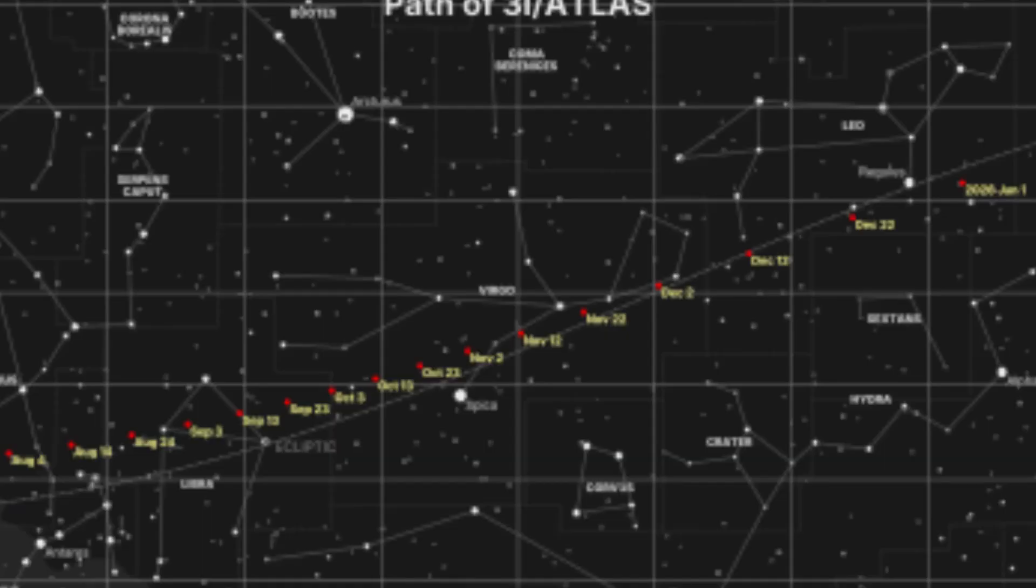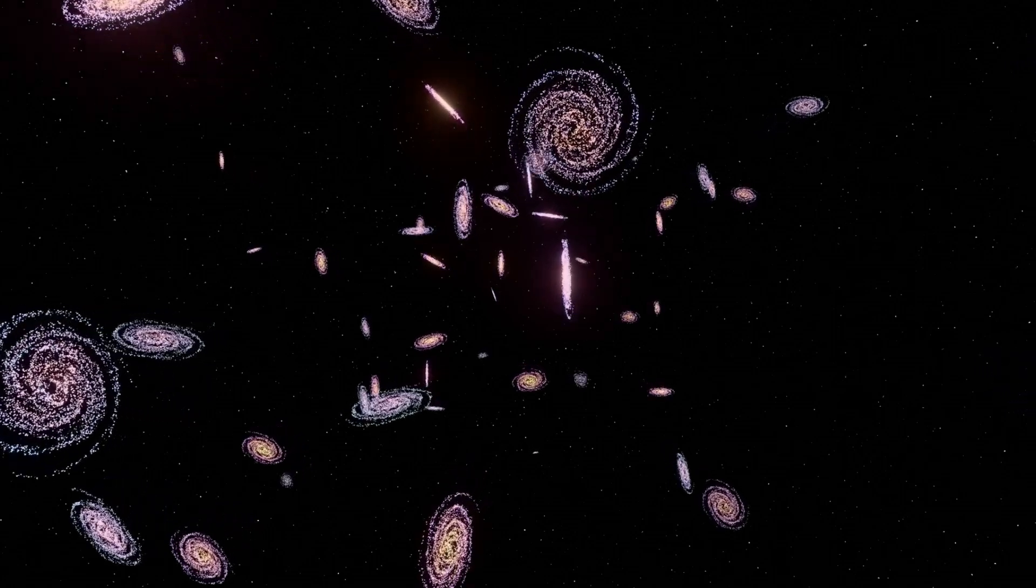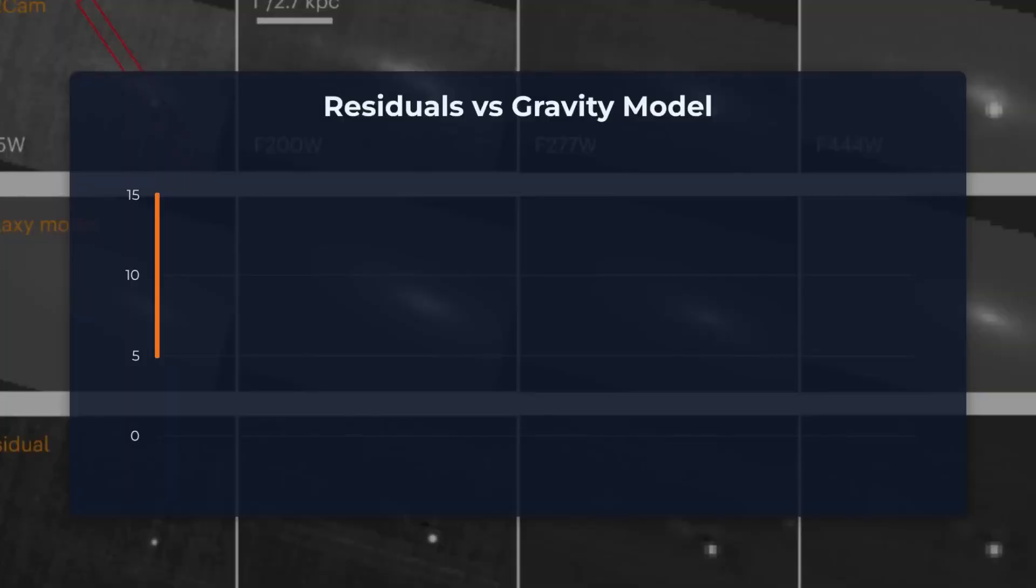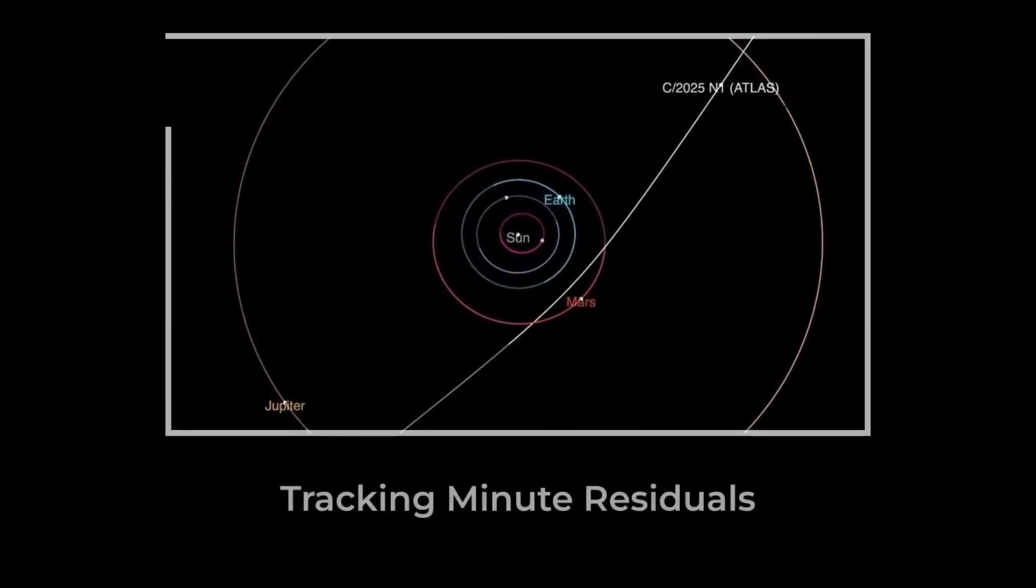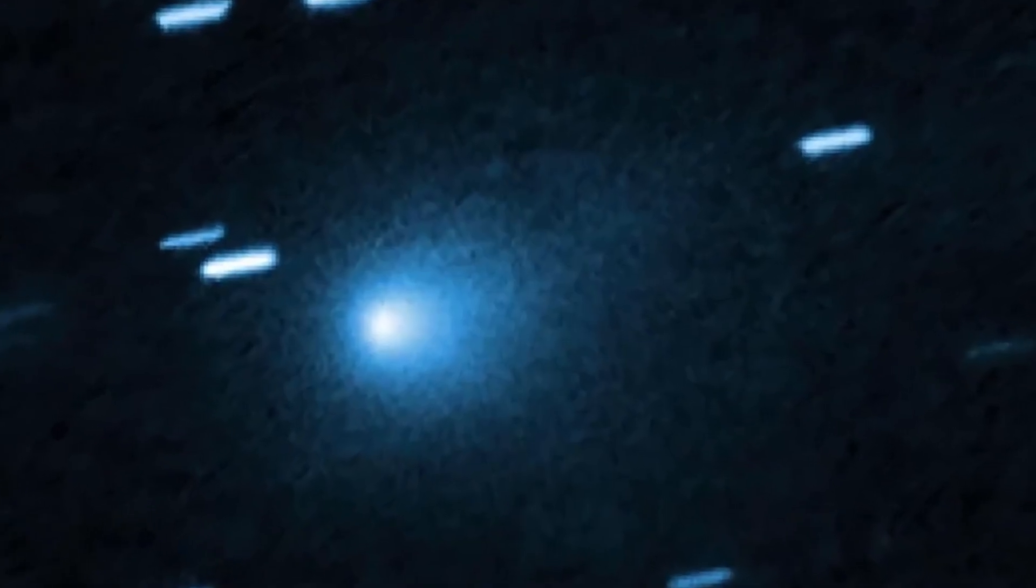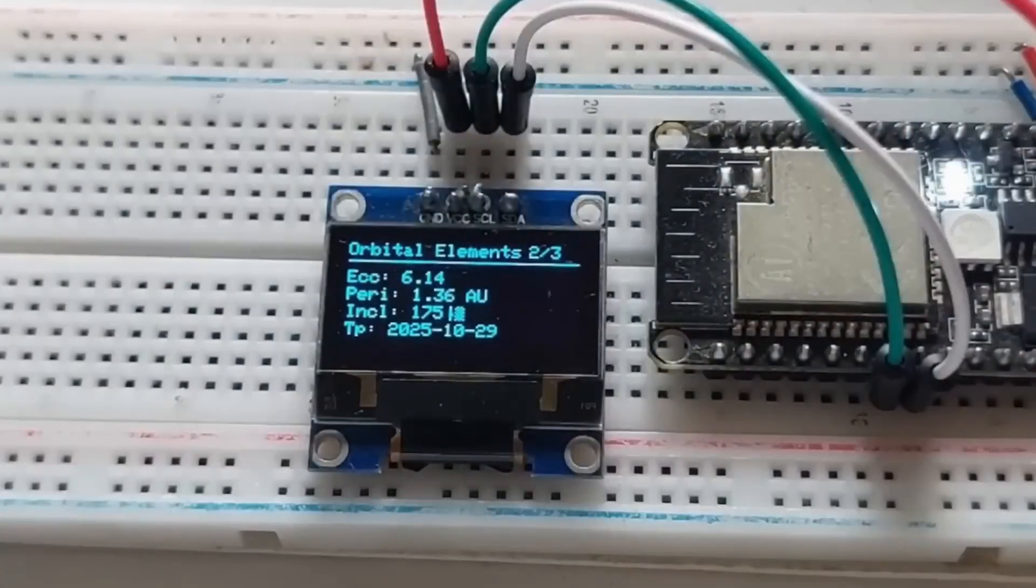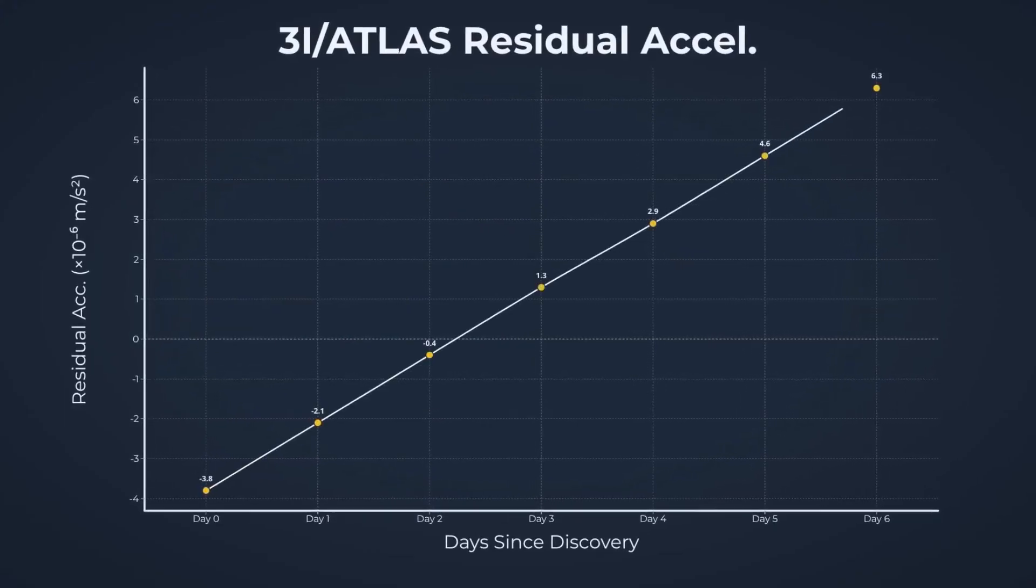These are the tiny differences between where the object should be according to a pure gravity model and where it actually is. Each residual, measured in fractions of an arc second, is a direct test of the fundamental laws of celestial motion. If something other than gravity is pushing or pulling on 3I Atlas, it will reveal itself as a pattern in these numbers—a systematic drift, a subtle kink, a deviation that grows relentlessly over time.